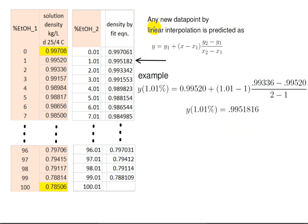Any new data point by linear interpolation is predicted by this equation right here. In the example where we want to find the density at 1.01%, the way you do this is to follow this equation. The y1 will be 0.99520, which is right there. Okay, so the y1 is there.